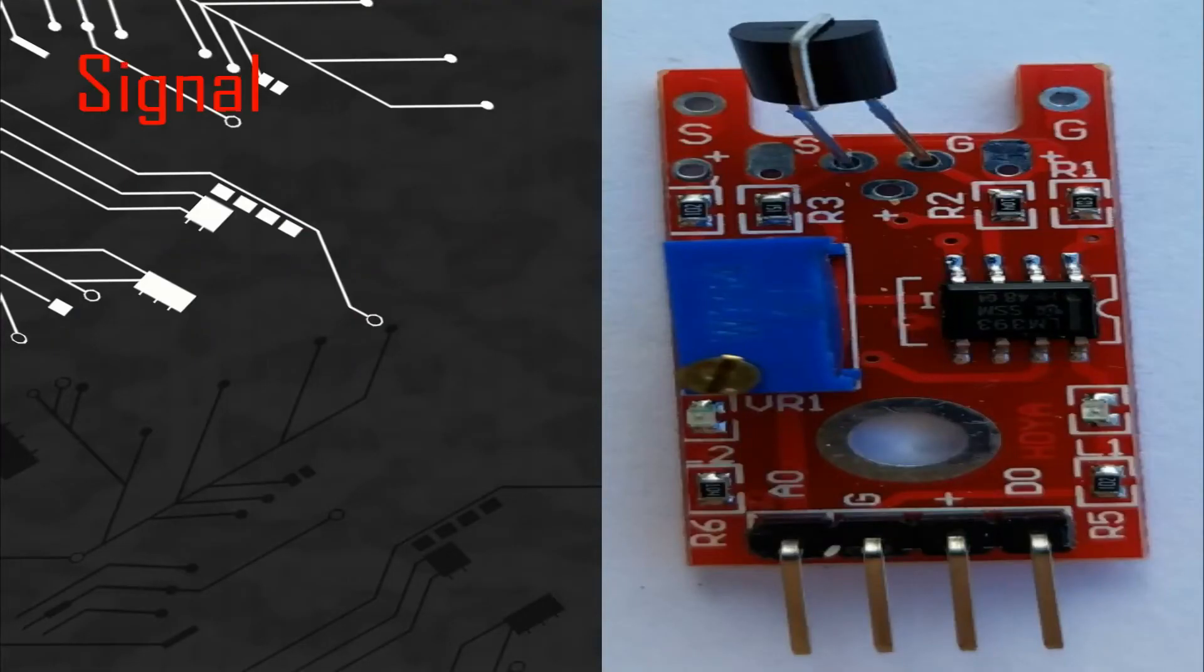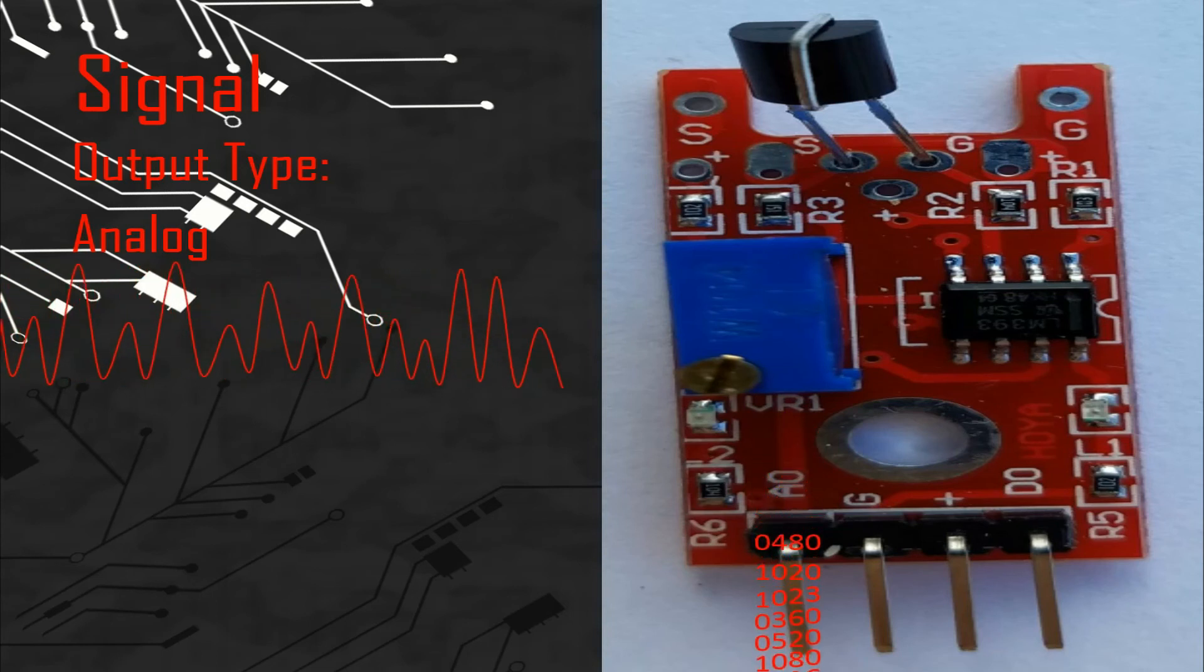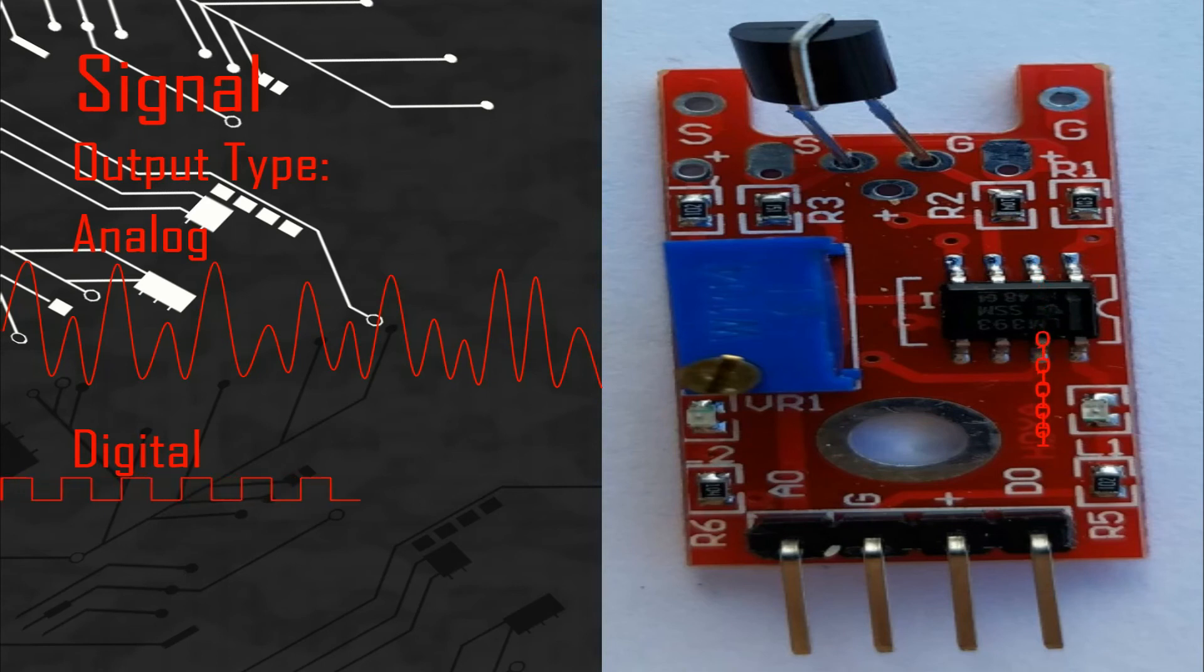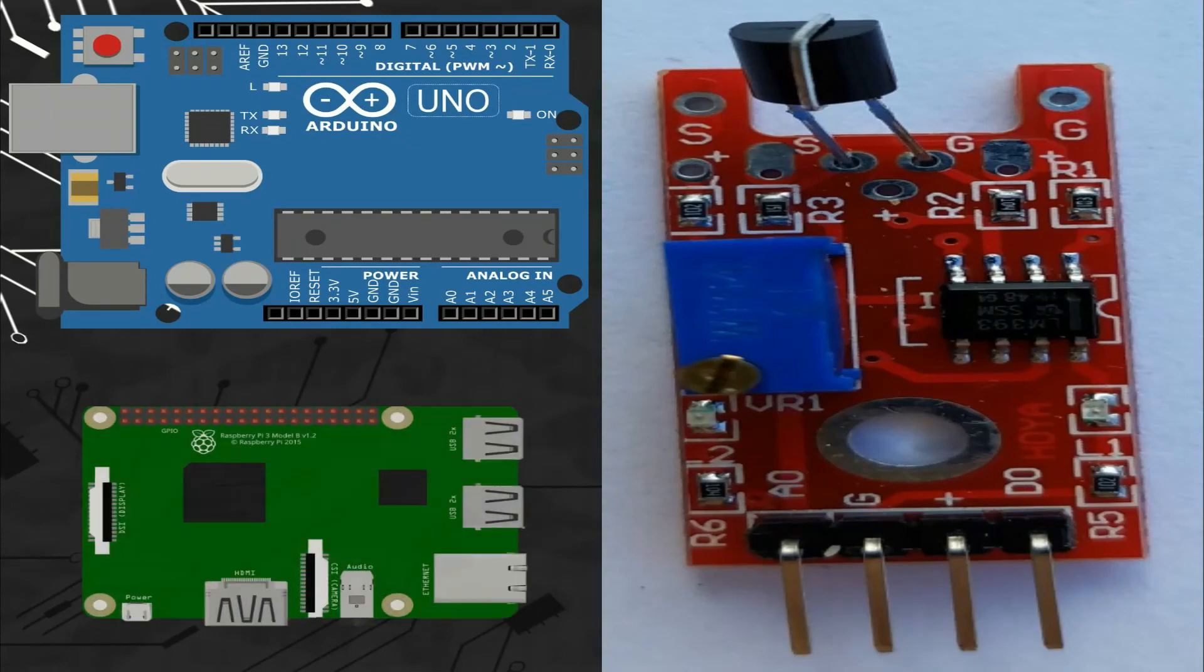So let's talk about the signal. This module gives two signals. We can connect the analog signal pin with any analog port, and the digital signal pin with any digital port of different microcontroller boards like Arduino or Raspberry Pi.